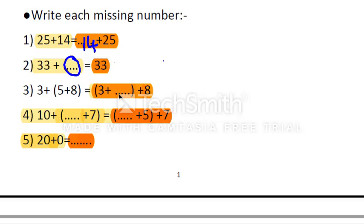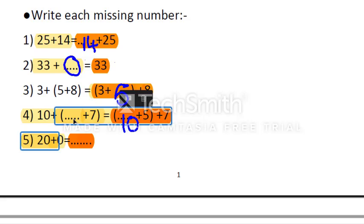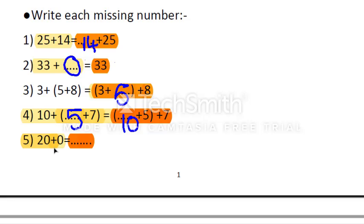The answer is 5. Exercise 4: 10 plus what plus 7 equals what plus 5 plus 7. Using the associative property, both sides have the same numbers, we only change the place of the parentheses. So we have 10 on both sides, 5 in the second place, and 7 in the third place. The answer is: 10 plus 5 plus 7 equals 10 plus 5 plus 7. Exercise 5: 20 plus 0 equals what? Using the identity property, any number plus 0 equals the same number, so the answer is 20.